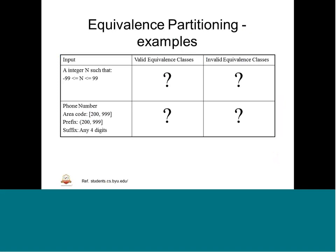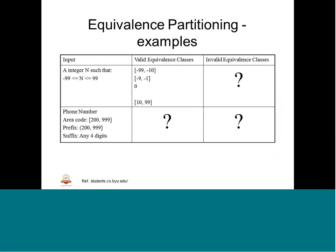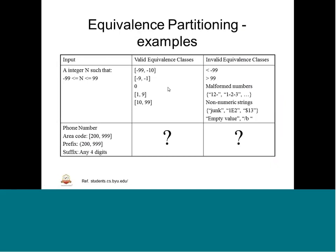We also studied an example of integer N ranging from minus 99 to plus 99. The valid equivalence class will have values like 10, minus 9, minus 1 — like this we have about 5 equivalence classes. Similarly, we have about 3 to 4 invalid equivalence classes where we are going to input values in such a way that it is tested with an invalid range of inputs.